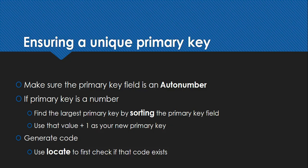If it's not an auto-number — just a normal number like in this case — what you could do is find the biggest value in the table using some sorting technique and then use that value plus one. So find what the biggest value is, and add one to it. You could also generate code by using locate to check if that primary key exists: if it does, don't insert the record; if it doesn't, proceed with the insert.